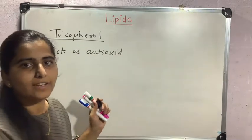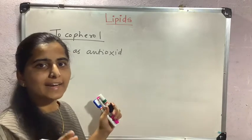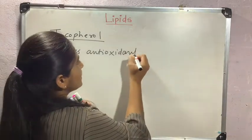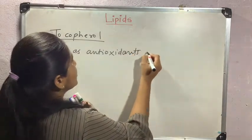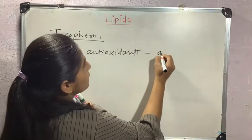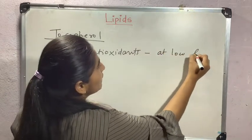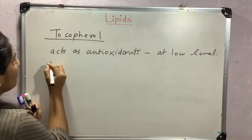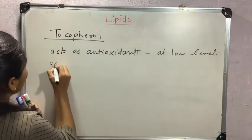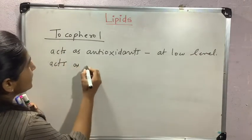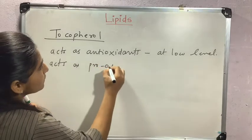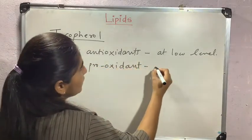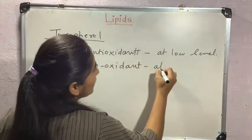Tocopherol acts as an antioxidant at low levels, preventing oxidation. However, at high levels it acts as a pro-oxidant, which causes oxidation. Remember this — it is very important from an exam point of view: tocopherol is an antioxidant at low levels but a pro-oxidant at higher levels.